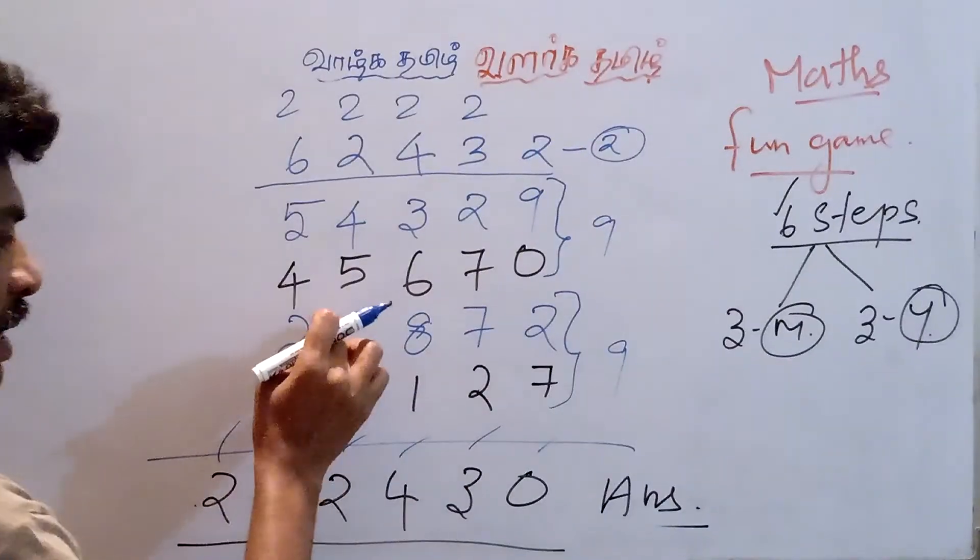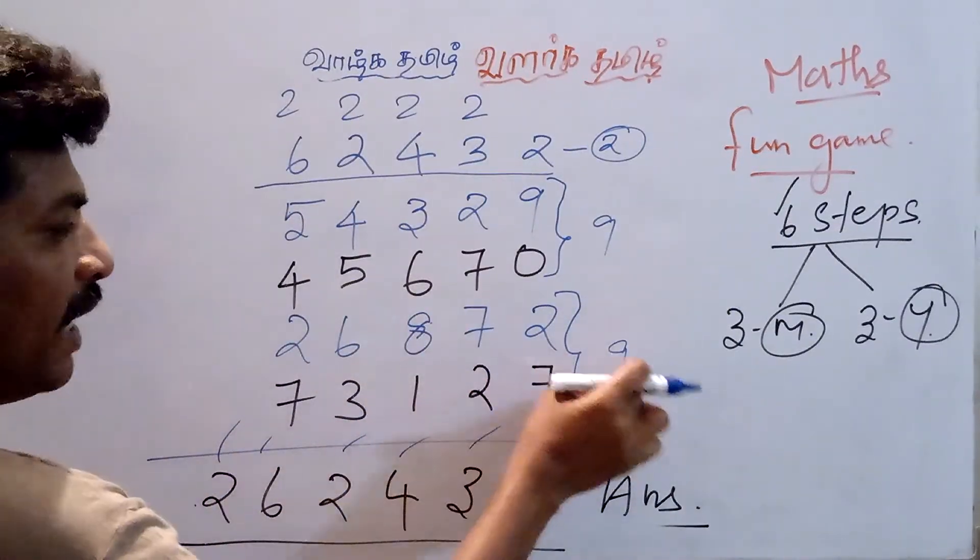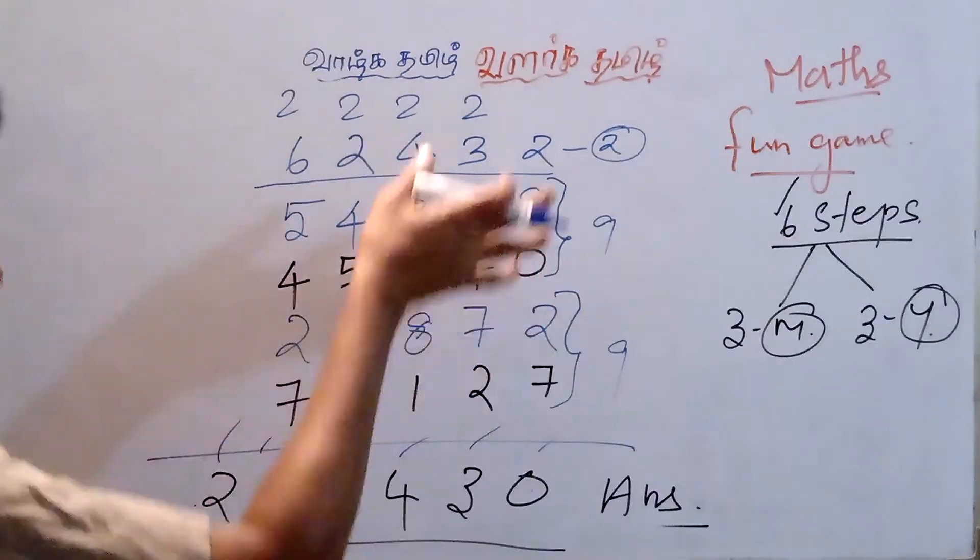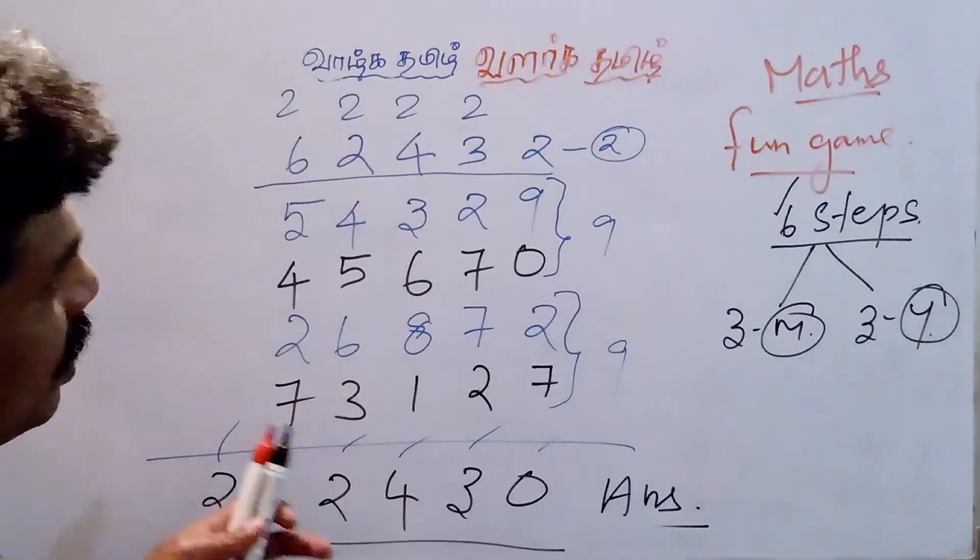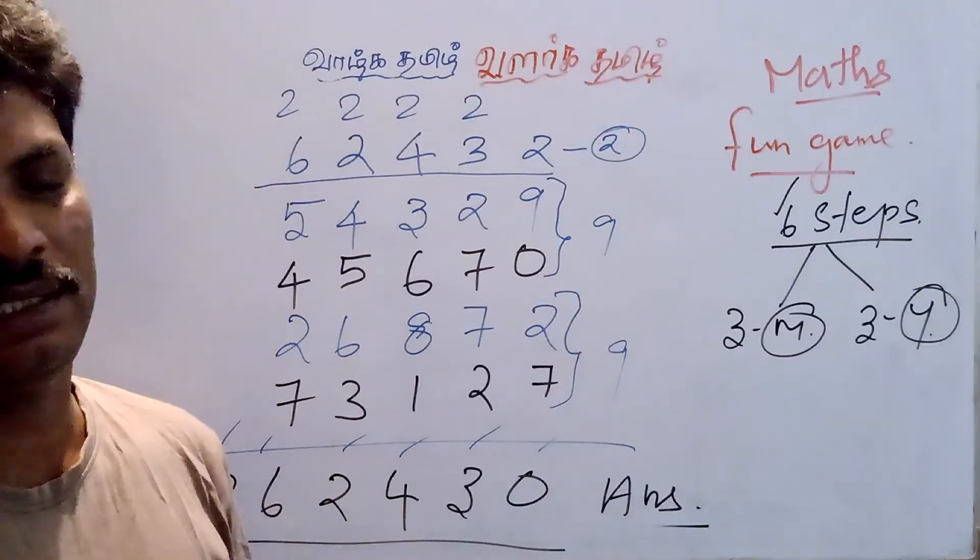Just you have to see: 2 plus 7 is 9, 6 plus 3 is 9, 8 plus 1 is 9, 7 plus 2 is 9, 2 plus 1 is 9. So this is the easy steps. You can play with your children as well as your friends. Thank you.